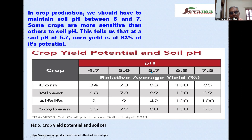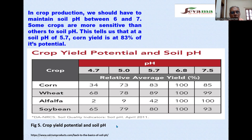As acidic conditions worsen — from pH 5.7 to 5 to 4.7 — crop yield potential declines for corn, wheat, alfalfa, and soybean. As shown in figure 5, the optimum soil pH of 6.8 is required for 100% crop yield potential.